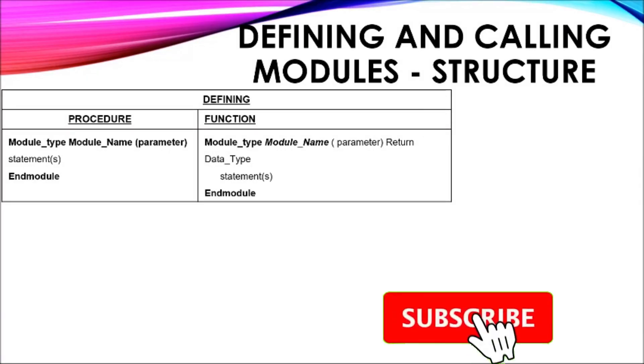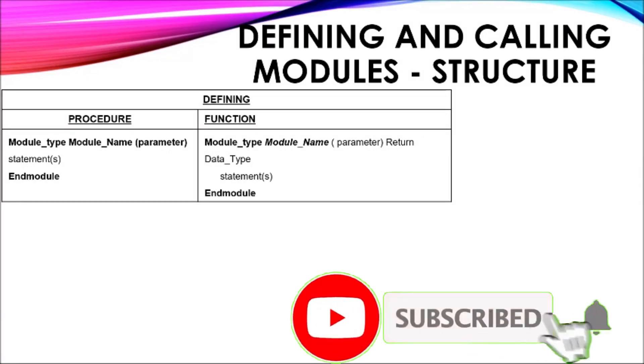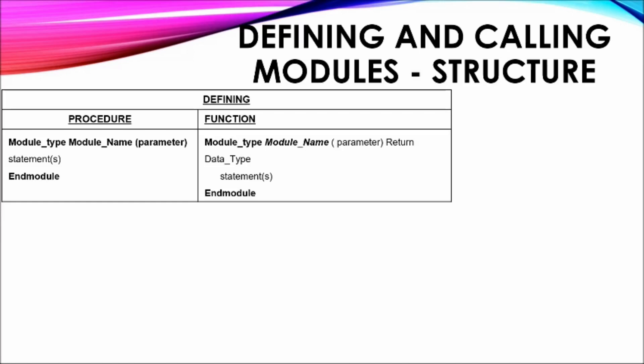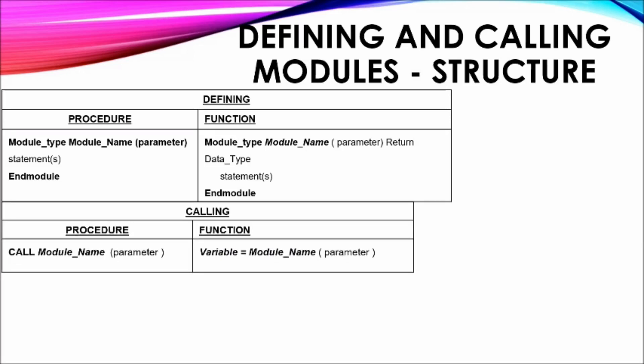Defining procedures and functions requires specifying the type of module being created. Each module is then given a name, followed by parameters being passed to the module. Functions — unlike procedures — specify the data type of the item being returned. The statements to be executed are then outlined, followed by the keyword used to indicate the terminating point of the module. The calling of procedures and functions indicates the activation of the module when it is required for use.